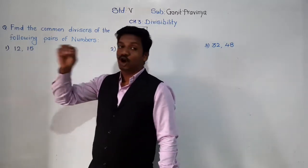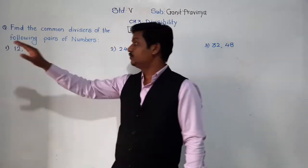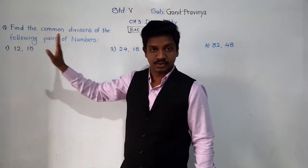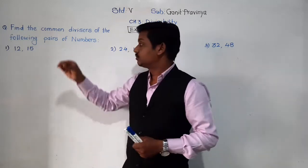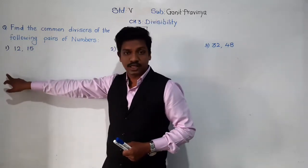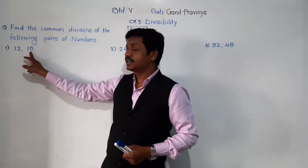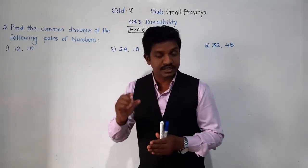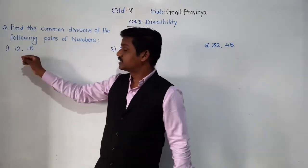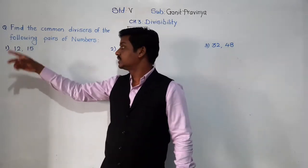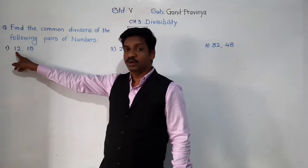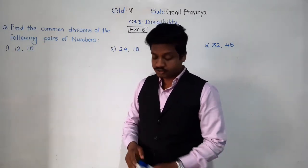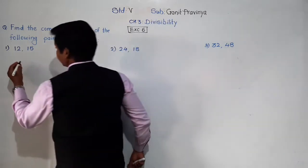So here we have to find the common divisors of 12 and 15. For that, what we have to do: first we have to find divisors of 12, then we have to find divisors of 15, and after that we have to check which divisors are common — the divisors which are part of both 12 and 15. Those are called common divisors.